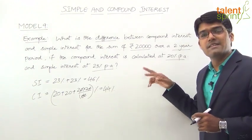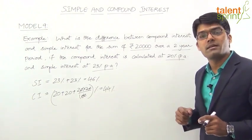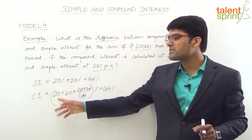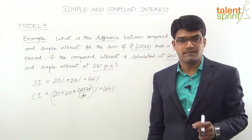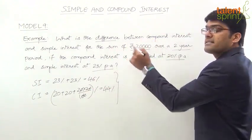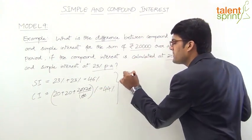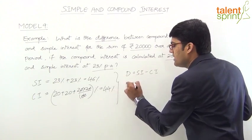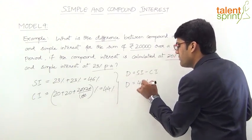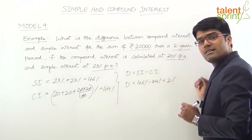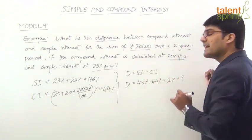So the difference between compound interest and simple interest: SI minus CI is 46% minus 44% which is 2%. So basically, how much is the difference between compound interest and simple interest? 2%.